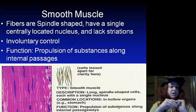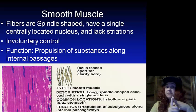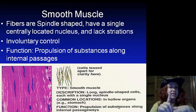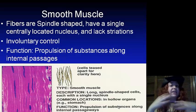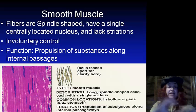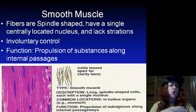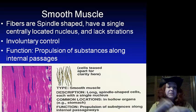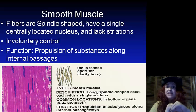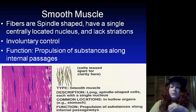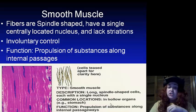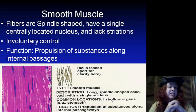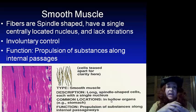For smooth muscles, the fibers are going to be spindle-shaped, have one single nucleus in the center, and they lack striation. These are involuntary, which means we do not control them — they just occur on their own. The function is for propulsion of substances through internal passages. In terms of location, they are found in hollow organs such as our stomach, colon, and intestines.